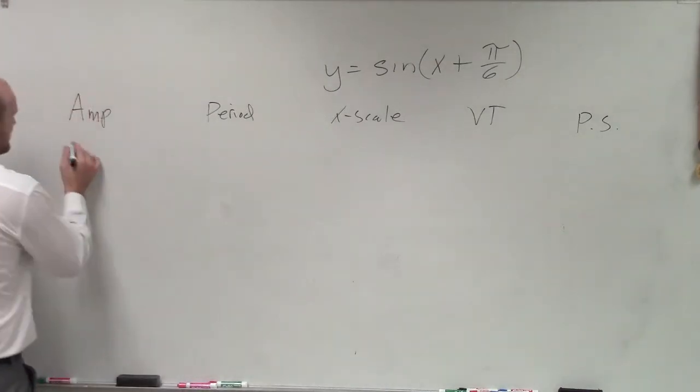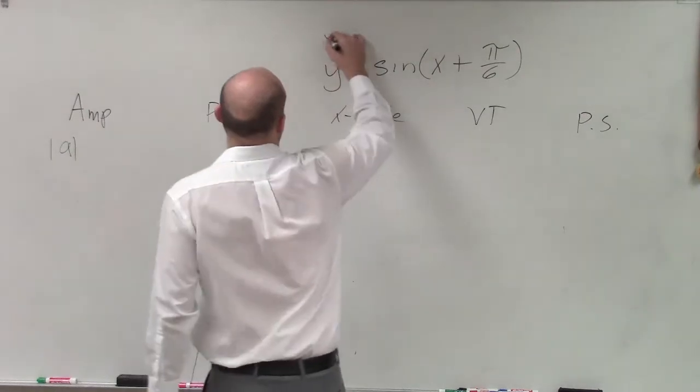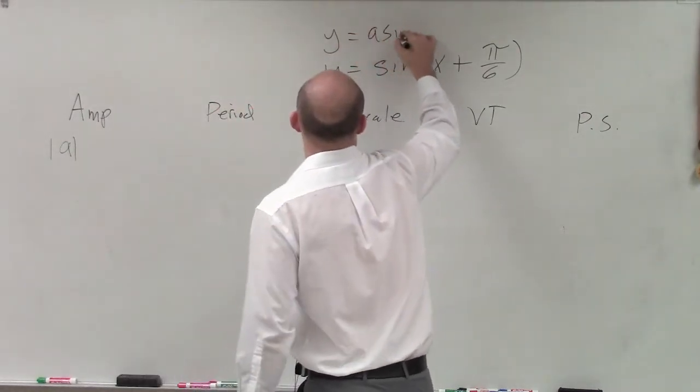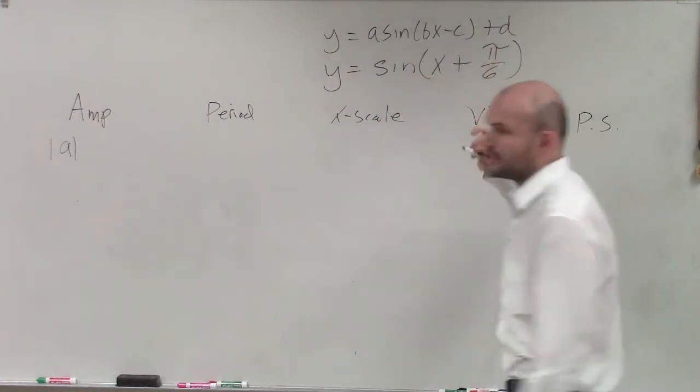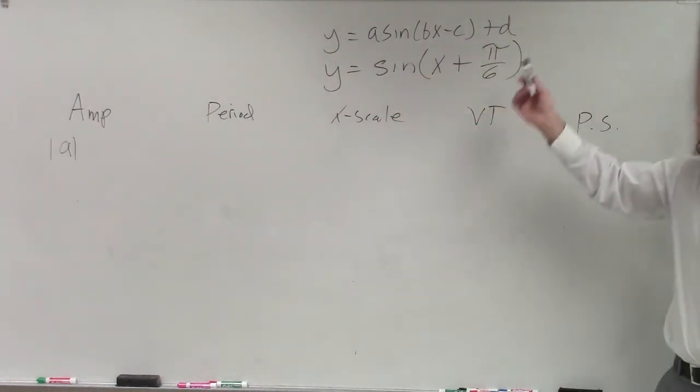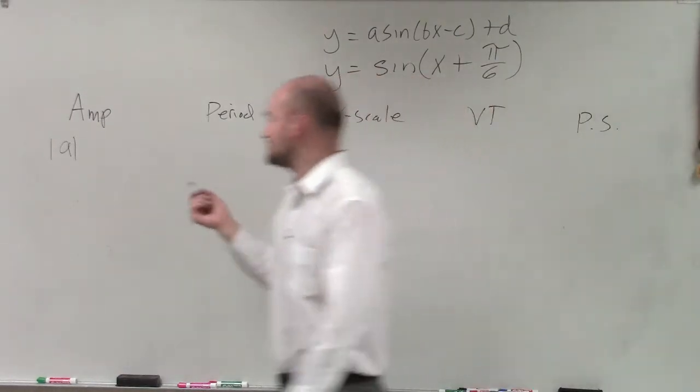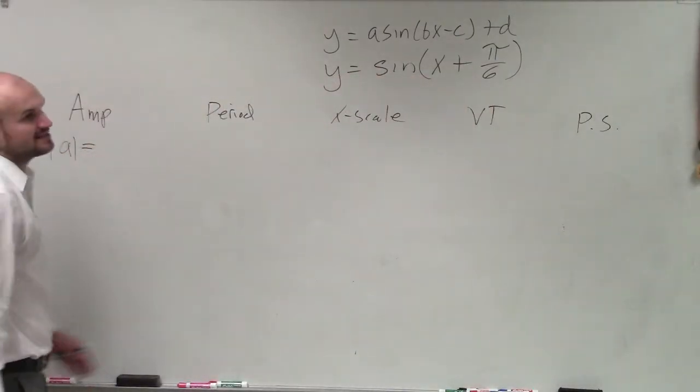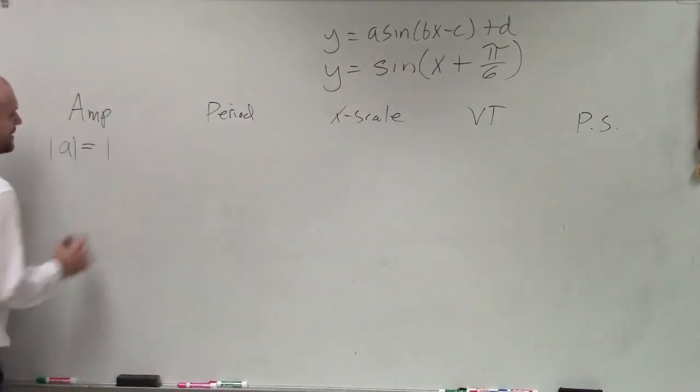The amplitude, ladies and gentlemen, remember it's just the absolute value of a. So you might say, well, what is the absolute value of a again? So we go back to our transformation form of this function. If we're going to have transformations to the parent graph, it's going to come from one of these values, a, b, c, or d. So amplitude is absolute value of a. So I look at this graph and I say, is anything being multiplied by my sine? No. So my amplitude is 1.